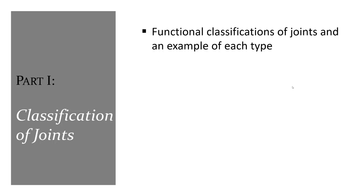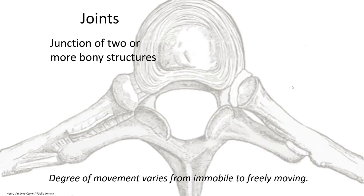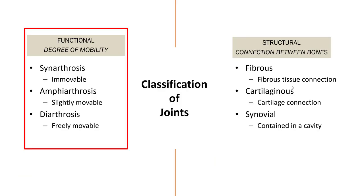We'll begin with joint classification. The broad and basic definition of a joint is when two bony structures meet. Thus the degree of movement at such a junction can range from immobile to freely moving. There are two methods to classify joints: one based on the motion allowed, which is functional, and the other based on the type of tissue in the joint. This lecture will follow the functional classification.